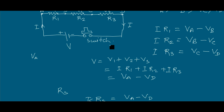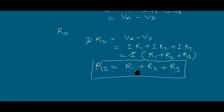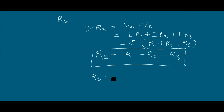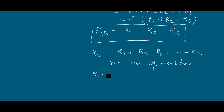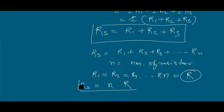We conclude that the equivalent resistance in a series combination is equal to the sum of the individual resistances R1, R2, and R3. If there are N number of resistors, the equation is RS = R1 + R2 + R3 + … + RN, where N is the total number of resistors. If all N resistors are equal, that is R1 = R2 = … = RN = R, then RS = N × R.